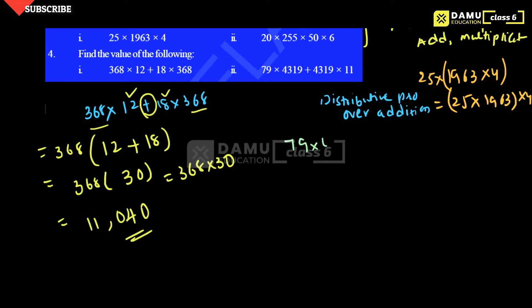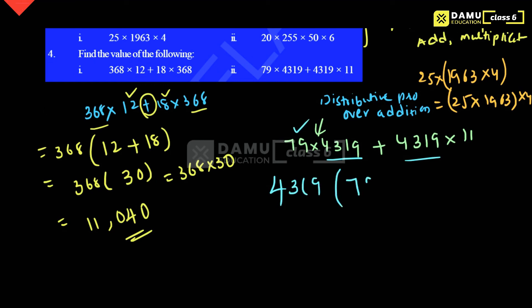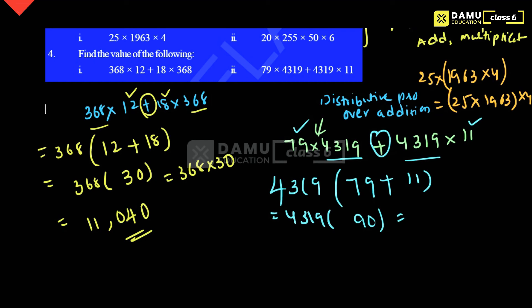Next: 79 into 4319 plus 4319 into 11. Again using distributive property over addition, 4319 is the common factor. Taking it outside: 4319 into (79 plus 11). Now 79 plus 11 equals 90, so we get 4319 into 90, which gives us 3,88,710. Thanks for watching, please subscribe.